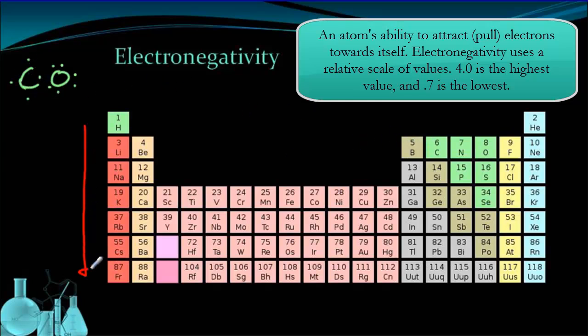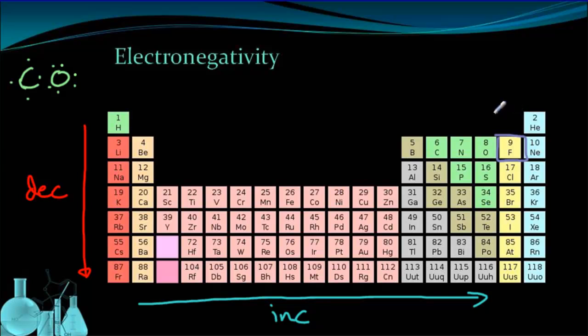As we go down a group, electronegativity decreases. As we go across a period, electronegativity gets higher. It increases. In fact, fluorine is our most electronegative element. It has an electronegativity of 4.0.